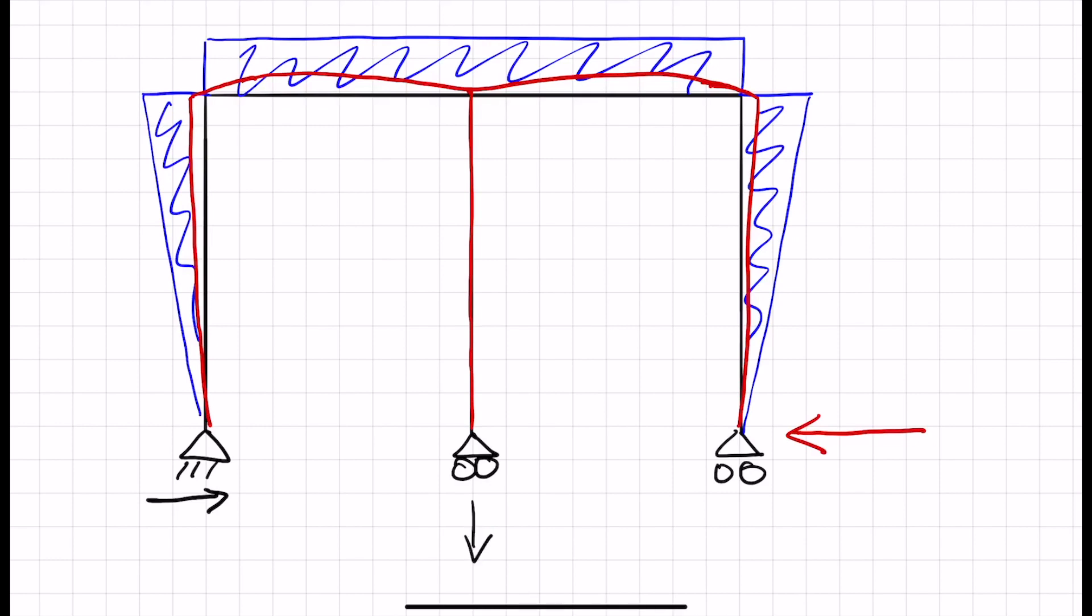So there is a vertical reaction downwards, and because it's symmetrical, these two have to be upwards on the outside. So then, instead of our bending moment staying constant along the top...